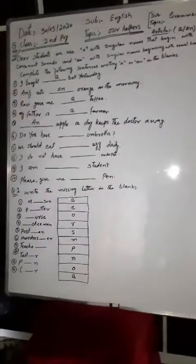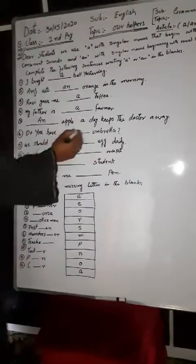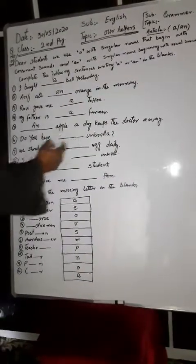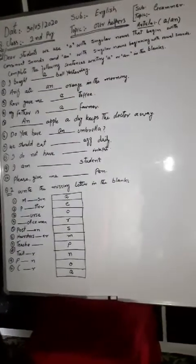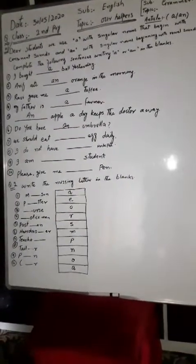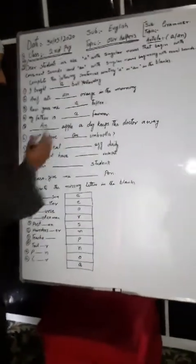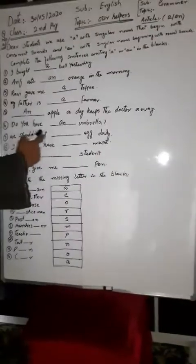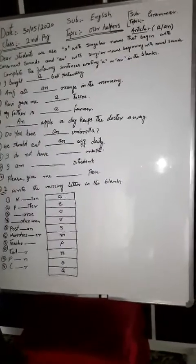Do you have an umbrella? Umbrella is a vowel word. You have a word starting with vowel, so it's 'an umbrella'. We should eat an egg daily. You have a word that starts with vowel, so it's 'an egg'. Correct.